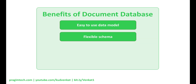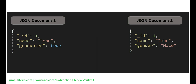Flexible schema is another benefit. JSON documents have a flexible schema, which means it's perfectly okay and normal for two documents to have different fields. In this example, we have two documents with student data — both have id and name fields, but the first document has a graduated boolean field whereas the second has a gender string field instead. Document schema in MongoDB is dynamic and self-describing. Every document we save can be as flat and simple or as complex as our application requires.